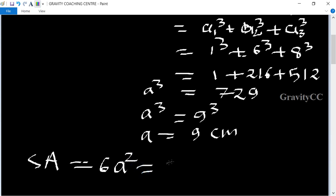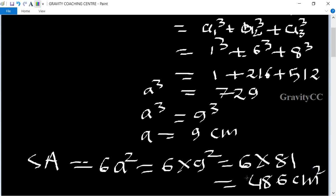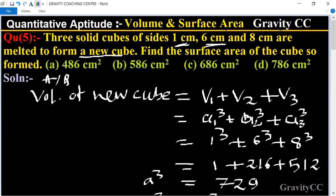Equals 6 × 9², equals 6 × 81, equals 486 centimeter squared, which is the required answer. So option A is the correct answer.